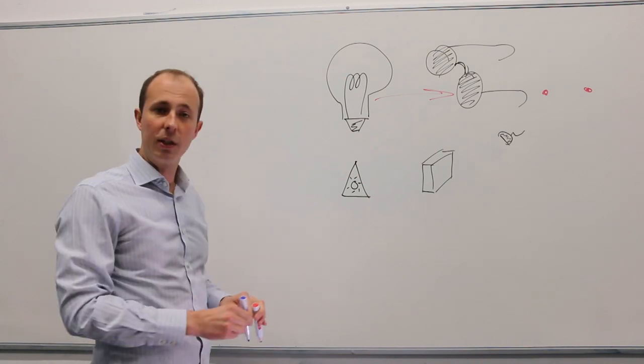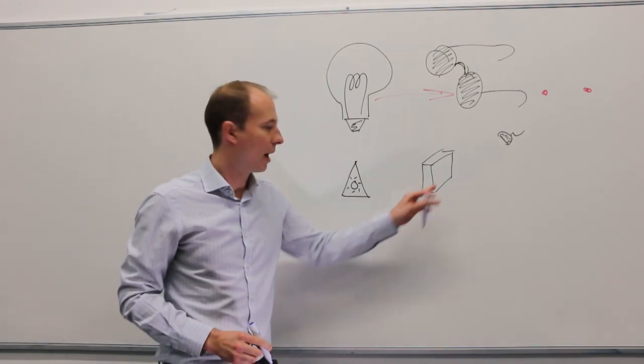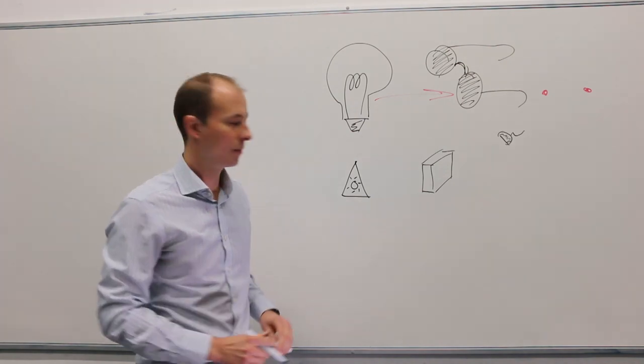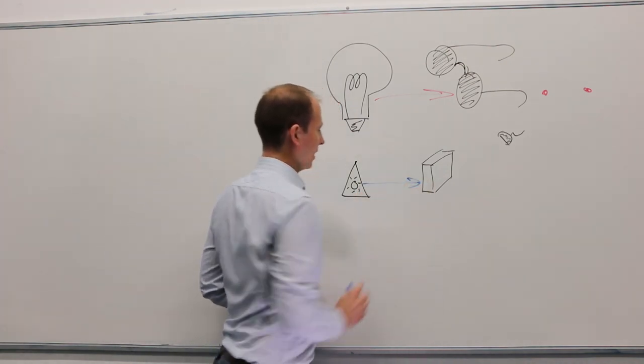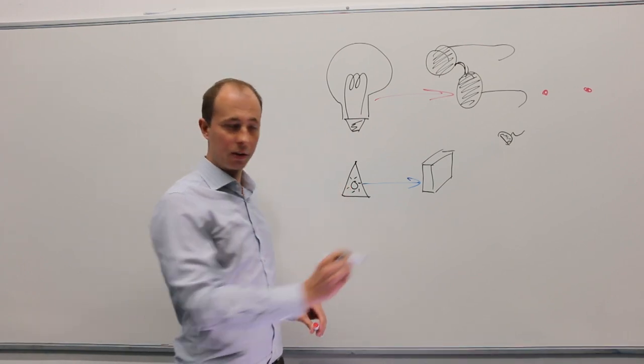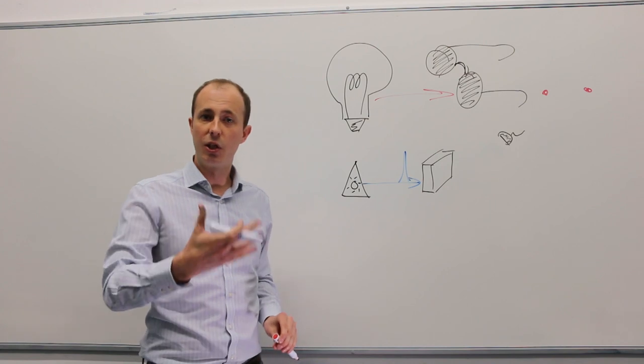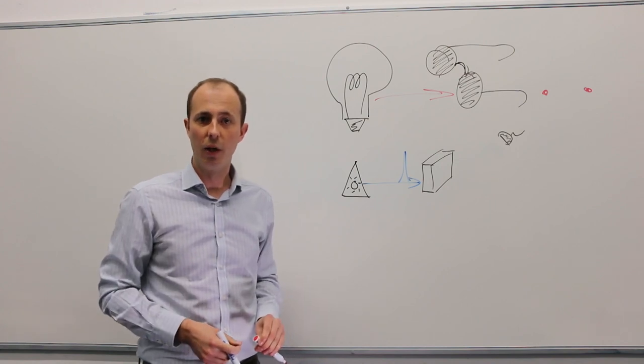So instead of that, what we can do is use a process called parametric down conversion, which involves generating photons in pairs. We take a laser that emits a short pulse of light, and we send that into a crystal that allows us to generate new frequencies of light that weren't there before.